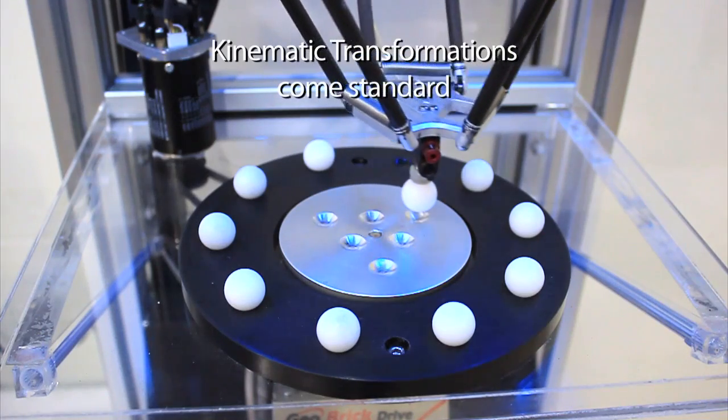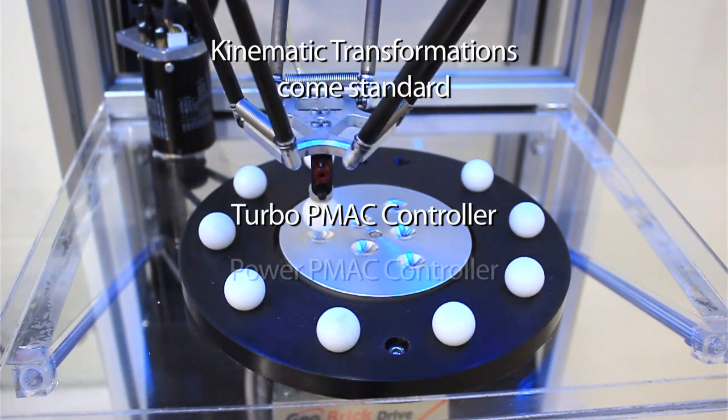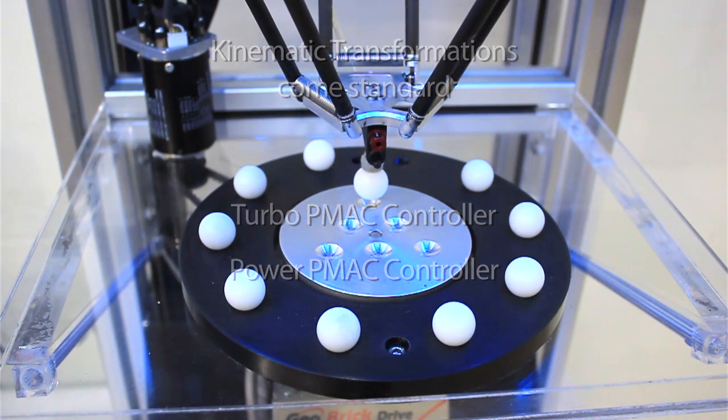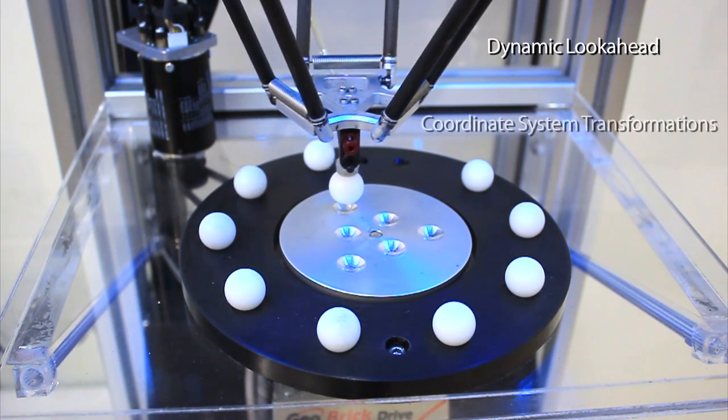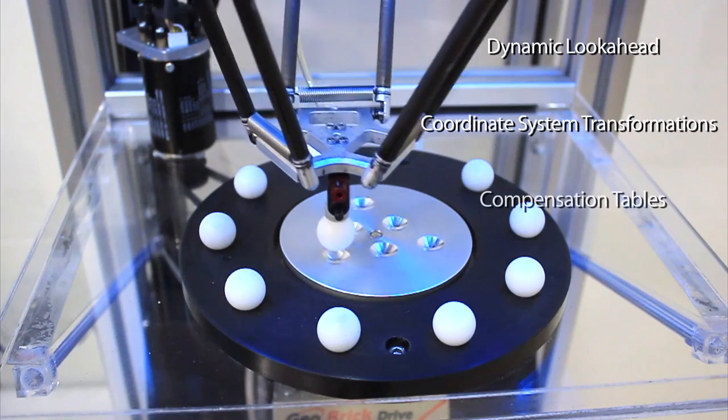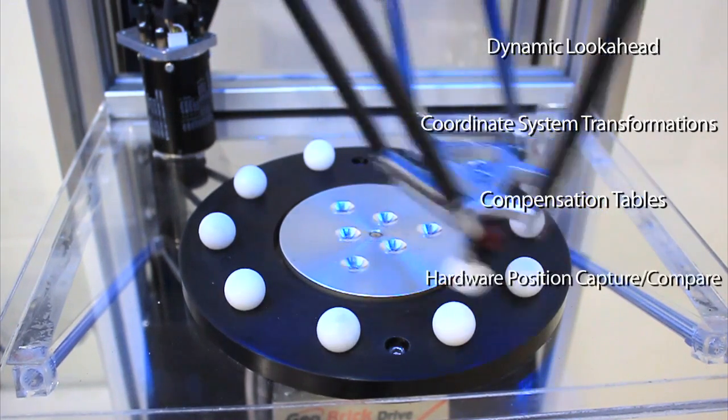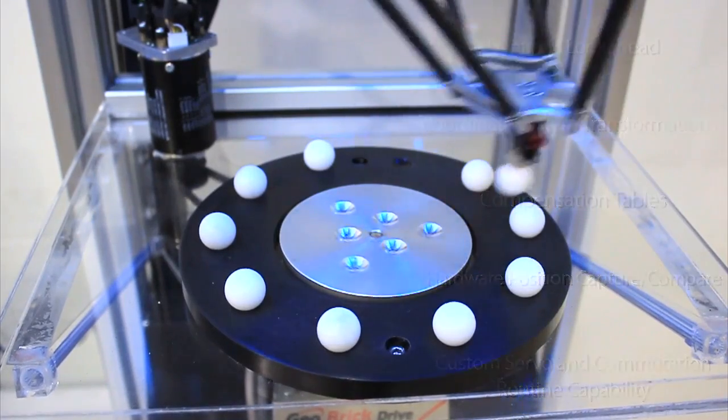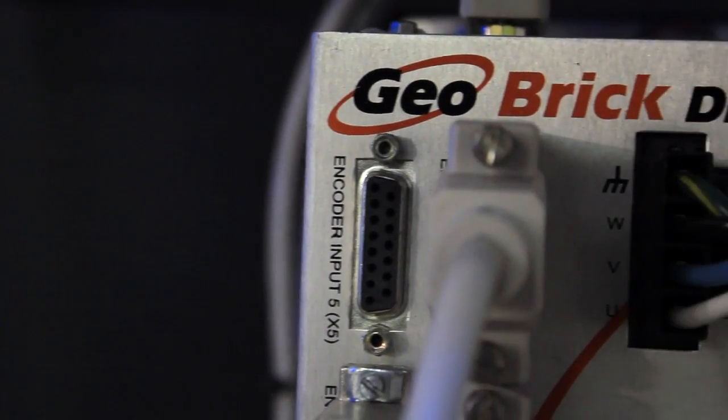Kinematic transformations come standard with any Turbo PMAC or Power PMAC controller, along with many other advanced features, including dynamic look-ahead, coordinate system transforms, compensation tables, hardware position capture and compare, and custom servo and commutation routine capabilities.